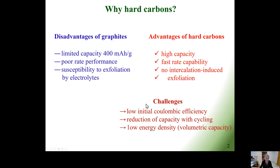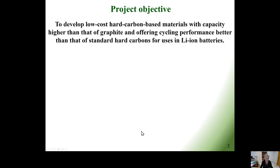However, simultaneously the nanoporous structure and high fraction of edge sites cause solid electrolyte interface formation, reducing the initial Coulombic efficiency and capacity cycling. Moreover, it results in lower energy density than graphite.